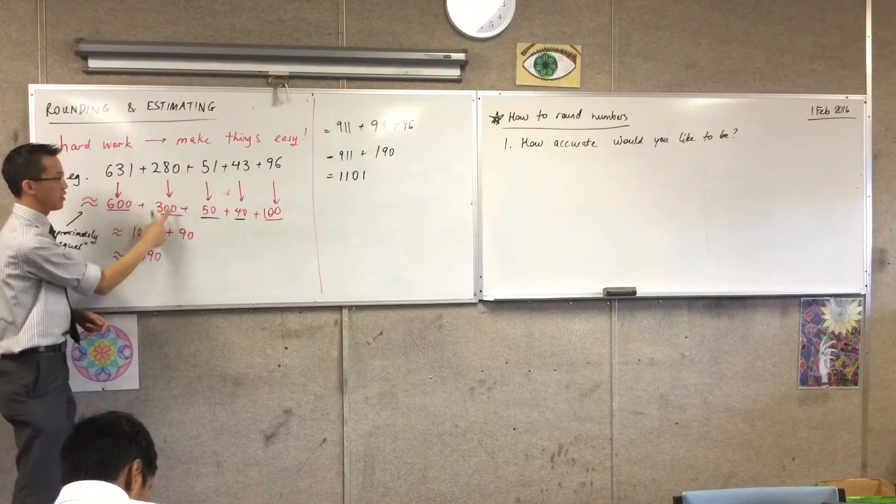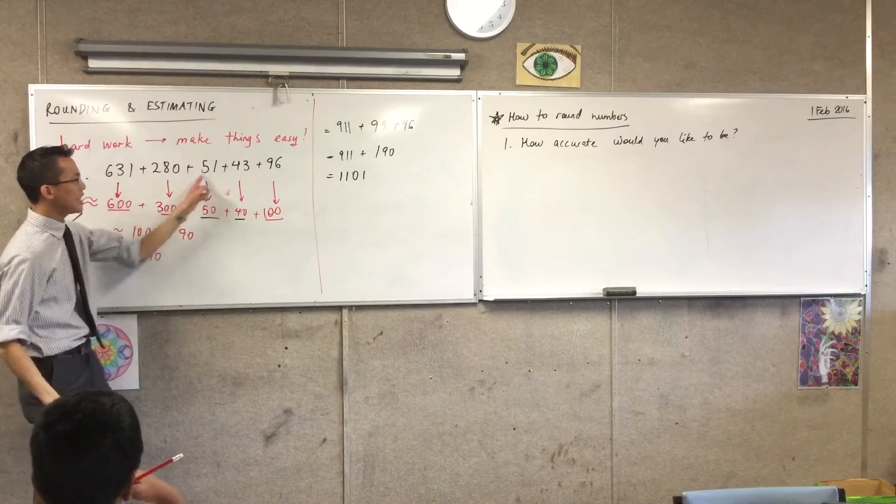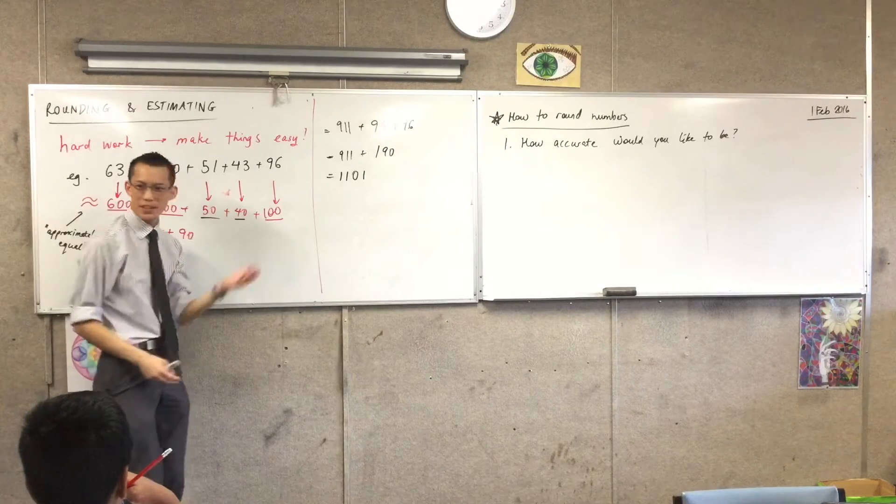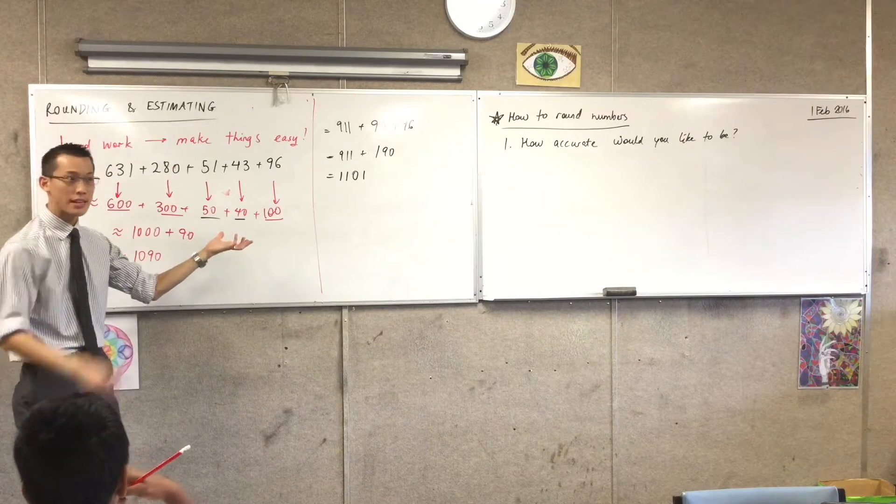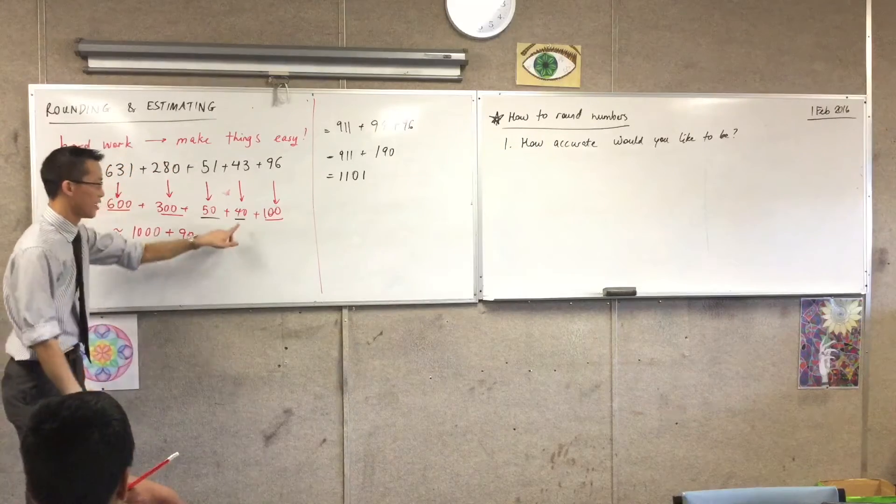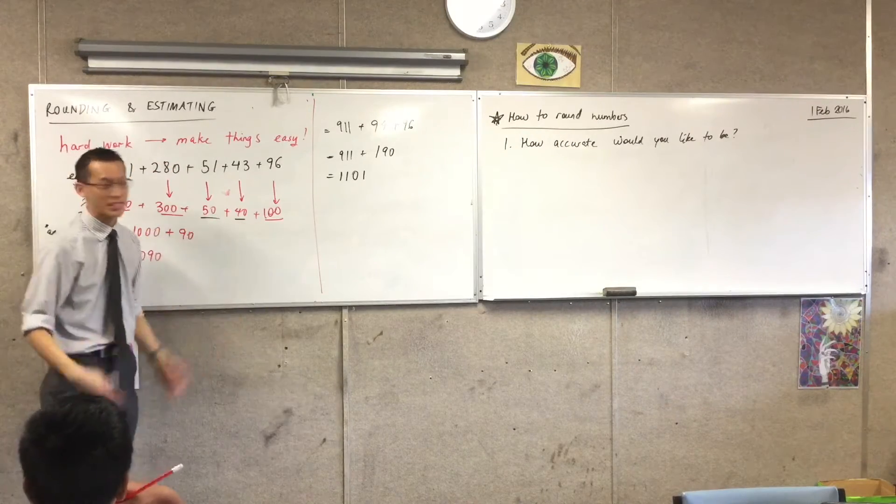And this number, we also rounded to the nearest hundred. But these numbers, we were a little more accurate. We didn't round to the nearest hundred, we rounded to the nearest... Ten. Very good, because 40 is a ten, 50 is a ten, 100 is also a ten.